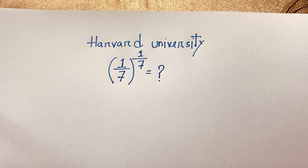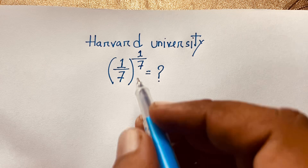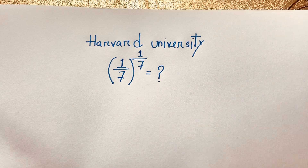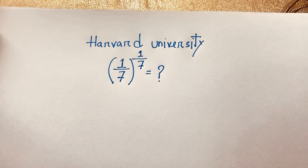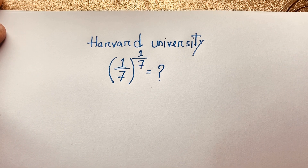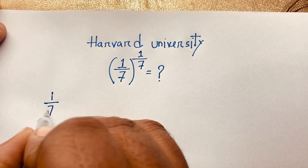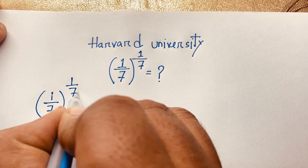Hello everyone. In this video, we have solved a nice radical math question: 1 over 7, whole to the power 1 over 7, is equal to what? How to solve this question? It is a nice math question. Okay, let's start. Our question will be 1 over 7, whole to the power 1 over 7.